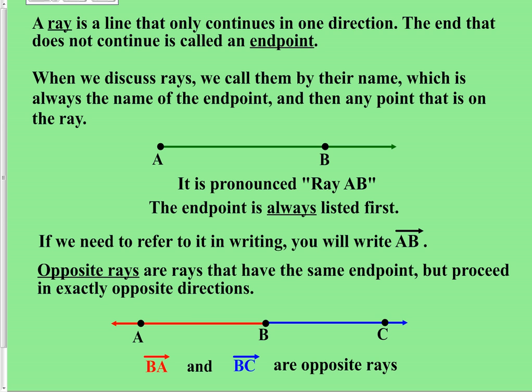A line that only carries on in one direction is what we call a ray. When naming a ray, the endpoint of the ray must be named first, and then any point on the extended end can be listed second — ideally the furthest point from the endpoint. If you have two rays that begin at a common endpoint and head exactly away from each other, those are what we call opposite rays.